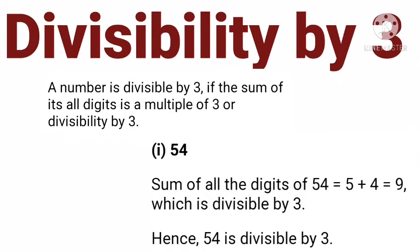A number is divisible by 3 if the sum of all its digits is a multiple of 3. For example, 54: the sum of all digits of 54 equals 5 plus 4 equals 9. Is 9 a multiple of 3? Yes, it is. When we divide 9 by 3, the remainder is 0 and the quotient is 3.